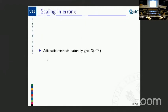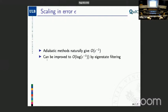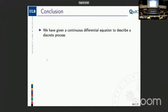A last point about scaling in the precision: adiabatic methods naturally have a scaling of 1/epsilon, but there are techniques to circumvent this, and they can also be done in this setting. Assuming you have a device that can do Hamiltonian simulation, even with such a device that's not a full quantum computer, we give information on how you could do eigenstate filtering.